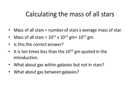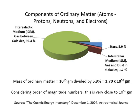Is this the correct answer? It's 10 times less than the 10 to the 56 grams quoted earlier. What about gas within galaxies but not in stars? What about gas between galaxies? To find the correct answer, we must look at the components of ordinary matter. Ordinary matter is defined as atoms, protons, neutrons, and electrons. The three components — stars, interstellar medium, and intergalactic medium — are shown on this pie chart. Stars comprise only 5.9% of the total mass. Thus, we can calculate the mass of ordinary matter by taking 10 to the 55th grams and dividing by 5.9%. The result is 1.7 times 10 to the 56th grams, which is very close to the 10 to the 56th grams quoted earlier.